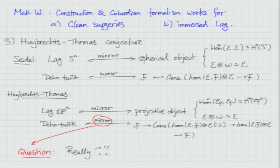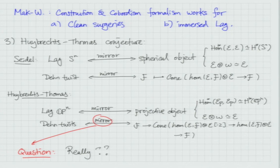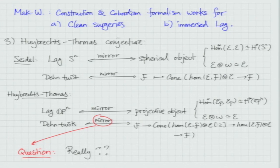In what sense is this really a mirror symmetry statement? You don't actually have any homological mirror symmetry happening here. It's just that if you have some Lagrangian sphere on the A side — the Dehn twist exact sequence is a completely symplectic statement — but part of it is motivated by mirror symmetry.